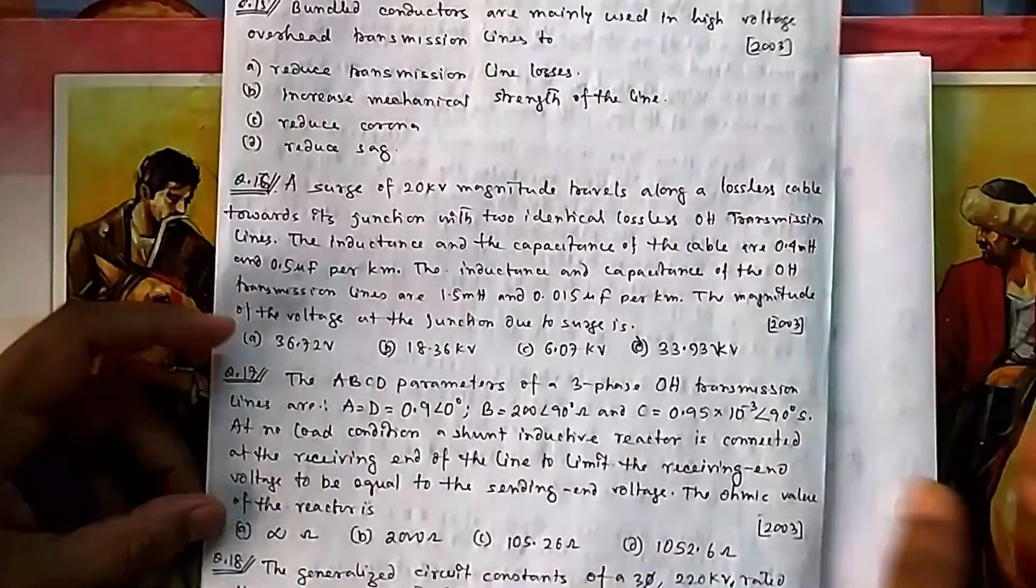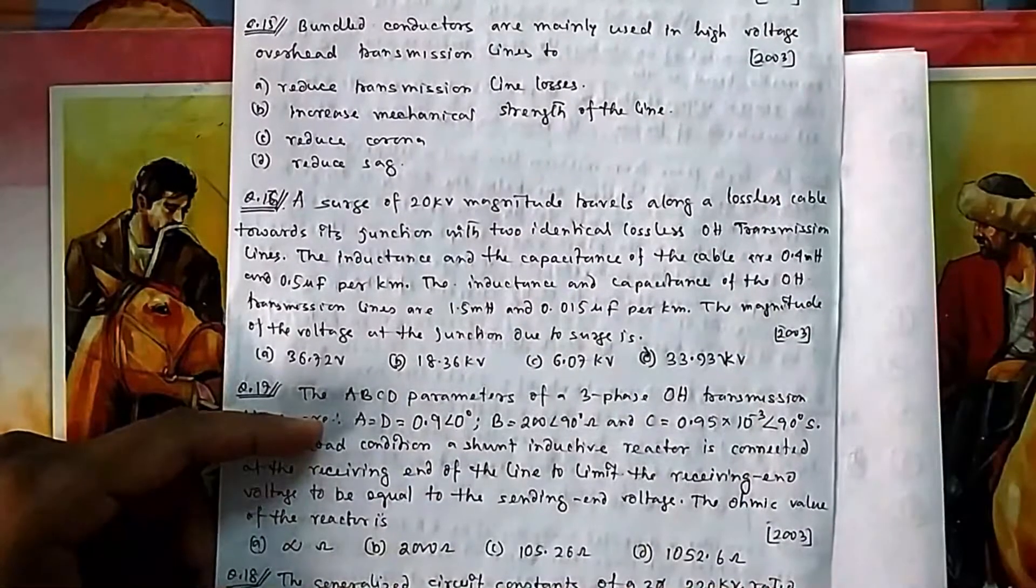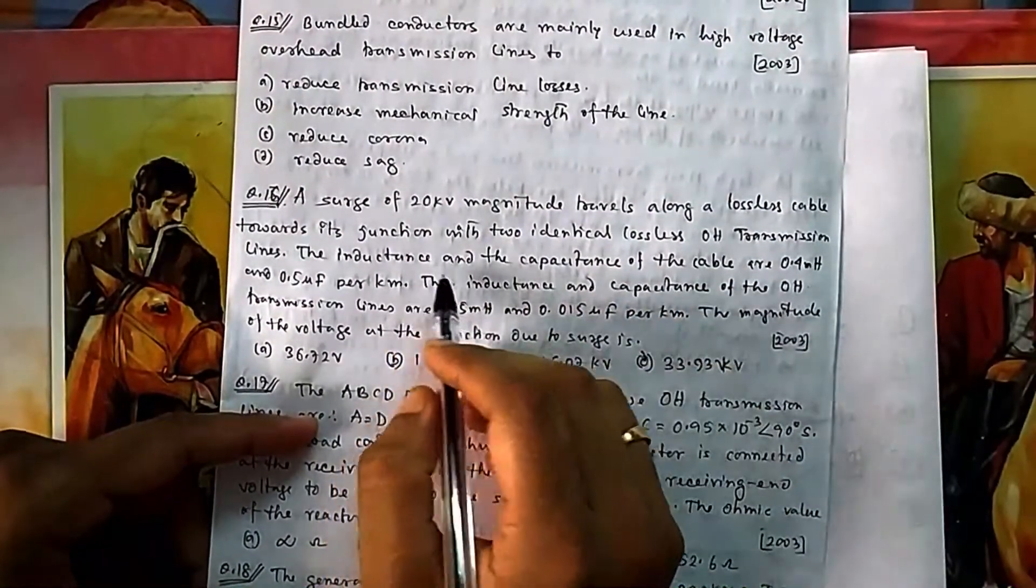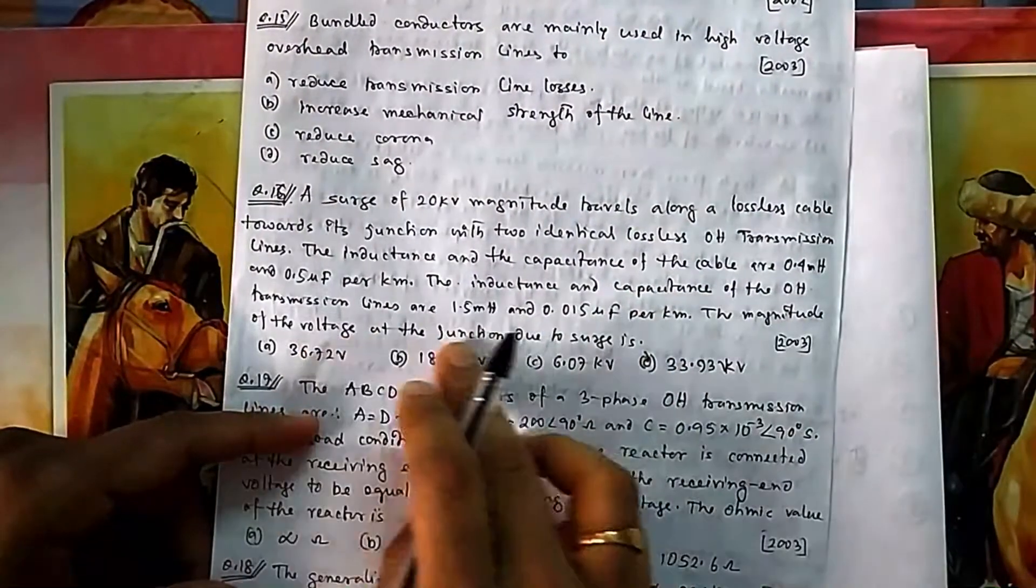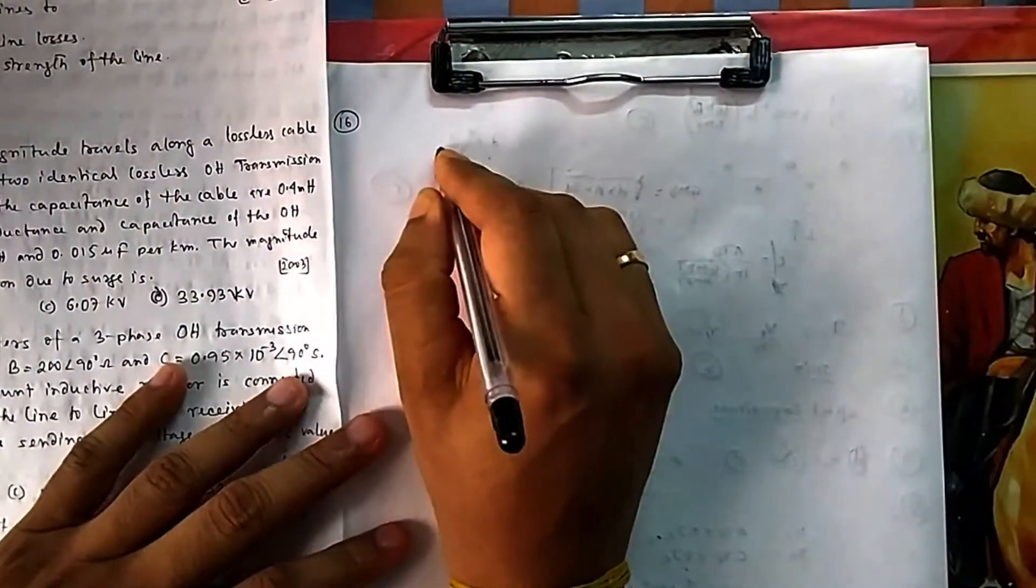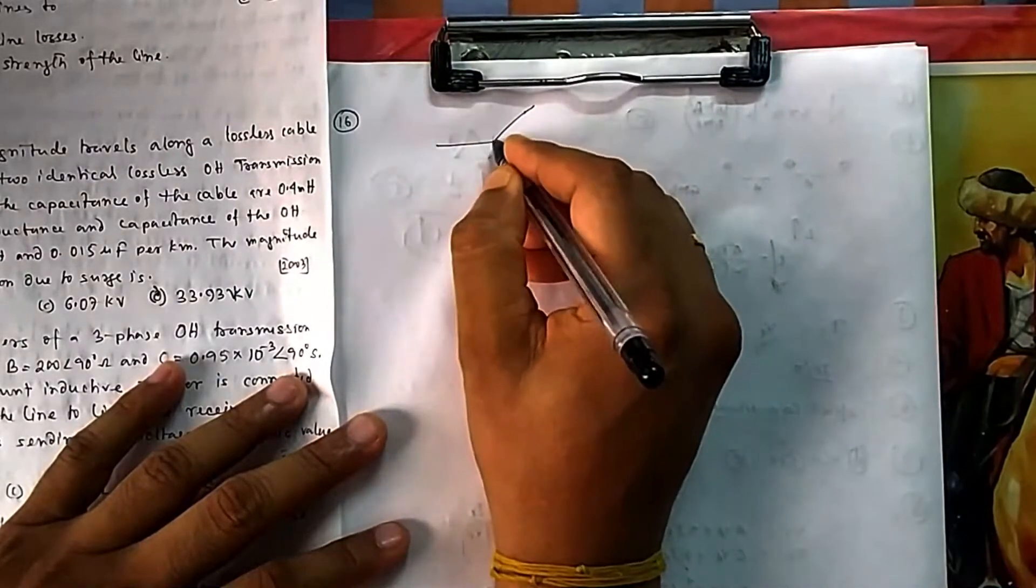Let's come to question 16. A charge of 20 kilovolt magnitude travels along a lossless cable towards its junction with two identical lossless overhead transmission lines. The inductors and capacitance of the cables and transmission lines are given. Find the magnitude of the voltage at the junction due to the charges. This is from the chapter on reflection coefficient, refraction coefficient, and the line ending at a junction point.